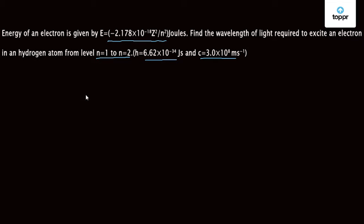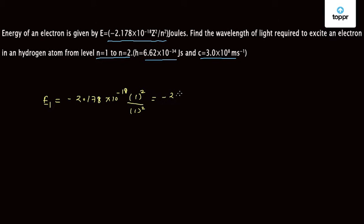Let us try to solve this question. This formula gives the energy of an electron in hydrogen. For n = 1, E₁ = −2.178 × 10⁻¹⁸ × Z²/n². For hydrogen, Z = 1, so Z² = 1, and n² = 1. This gives E₁ = −2.178 × 10⁻¹⁸ joules.